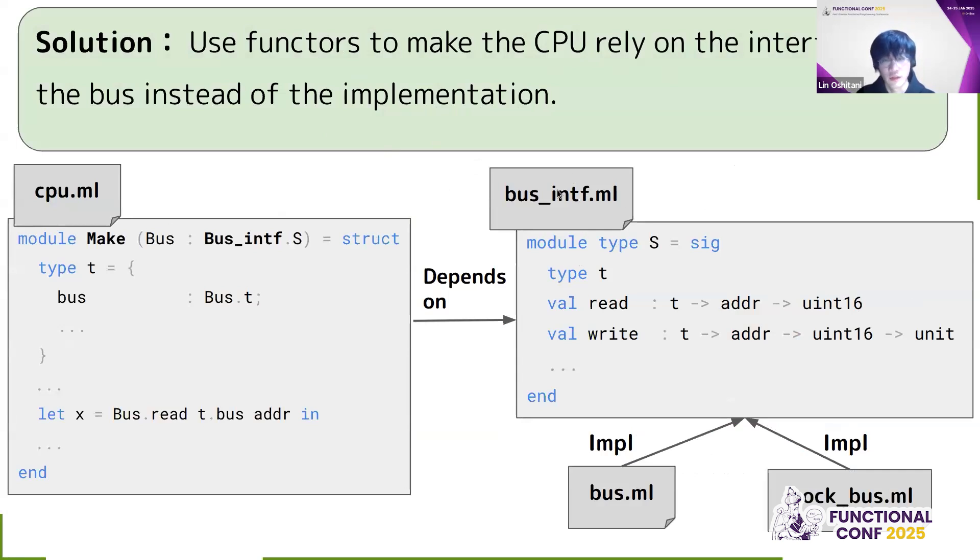So here, I have defined a bus interface. The bus interface will be an interface that has a read and a write that passes an address and you can read values from it. Now, the CPU, it is no longer a simple module, it is a functor. So it will take a module and return a module. And the module that it takes is any module that satisfies the bus interface. And then it will take a module that satisfies the bus interface and then it will have a reference to that. And then we'll call reads and writes for this bus. Now the bus interface can have multiple implementations, like the bus.ml, which is the actual bus module. But you can also have a mock bus implementation, which simply does not connect to the actual IO devices and just implements a very simple read and write functionality.